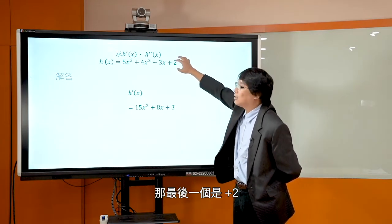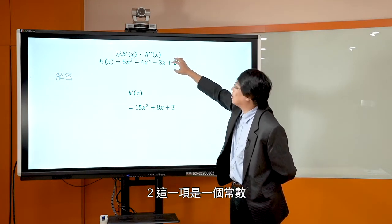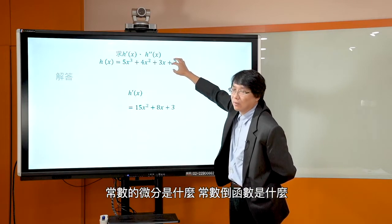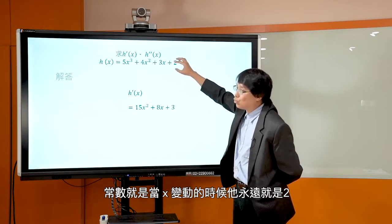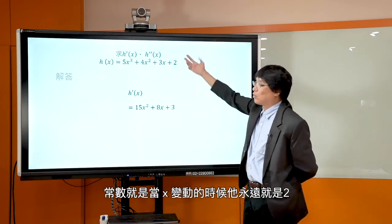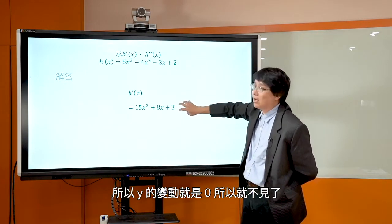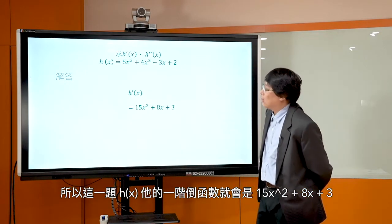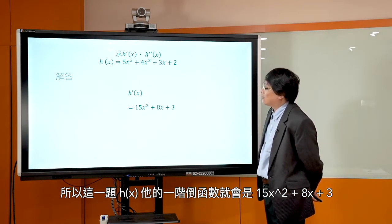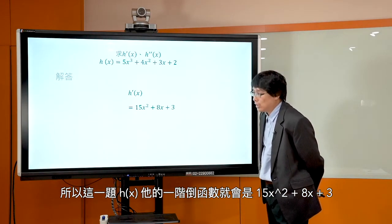第二项是4x²，4是个常数，你就把它先拿到前面来。x²的微分是2x，所以4乘上2x，那会是8x。那第三项，3x它的微分是什么呢？x的微分是1，所以3乘上1，那就会是3。最后一个是加2，2这项是一个常数，常数的微分是0，所以就不见了。